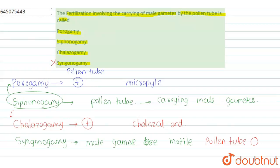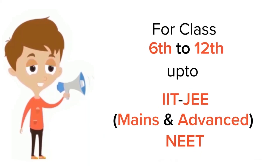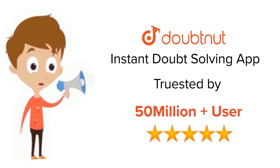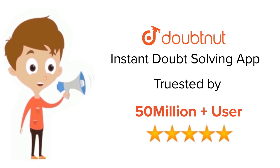We have three options remaining: porogamy, chalazogamy, and siphonogamy. The question asks: fertilization involving the carrying of male gametes by the pollen tube is called — and the answer is siphonogamy, as it is the broader term covering all such cases. I hope I have answered your doubt. Thank you. For class 6–12, IIT JEE, and NEET level, trusted by more than 5 crore students — download DoubtNet today.